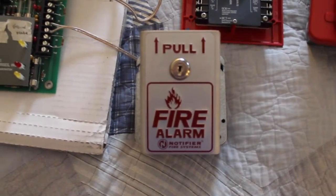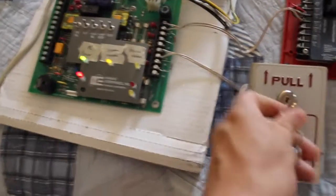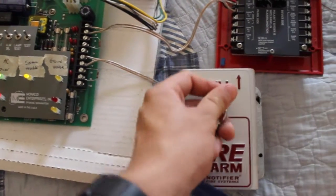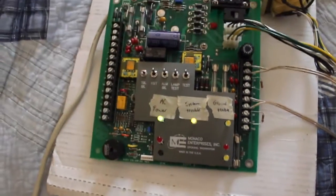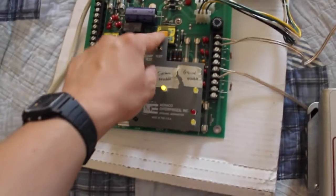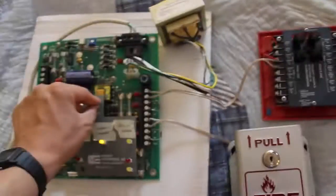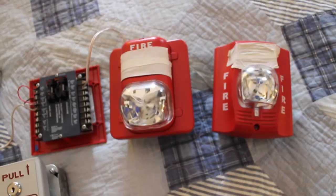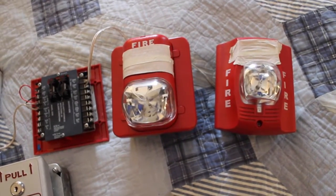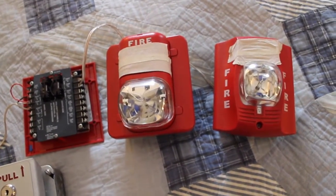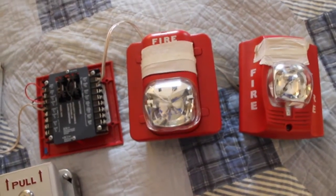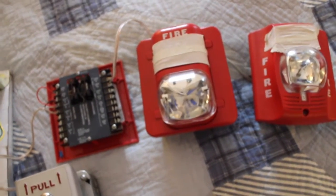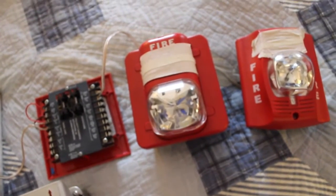So, let's reset the pull station. Stick our Notifier key in there, and we can reset it. Let's hit the drill switch, well, test switch. As you can see there, when it does like four blasts, they're syncing up to each other, which is pretty cool.